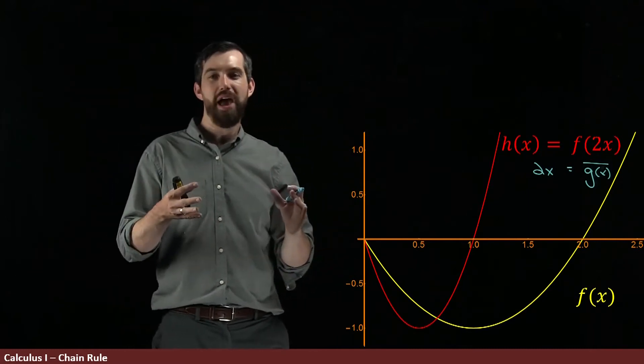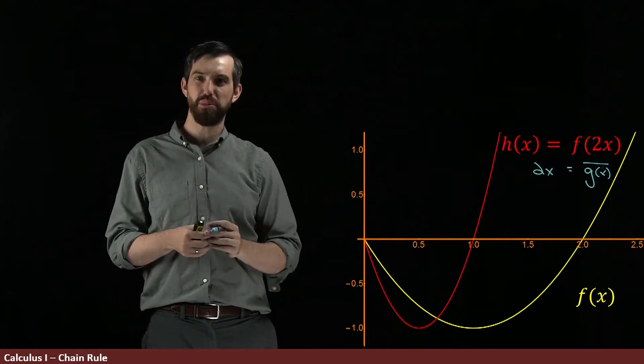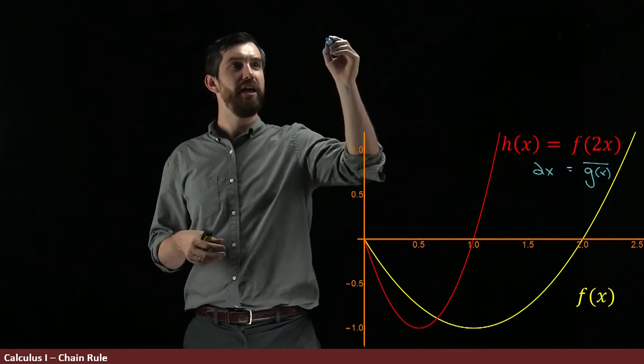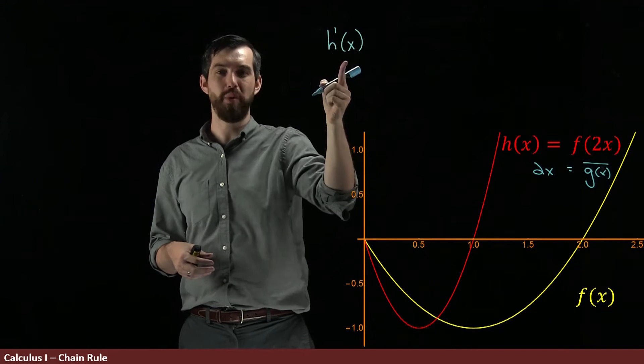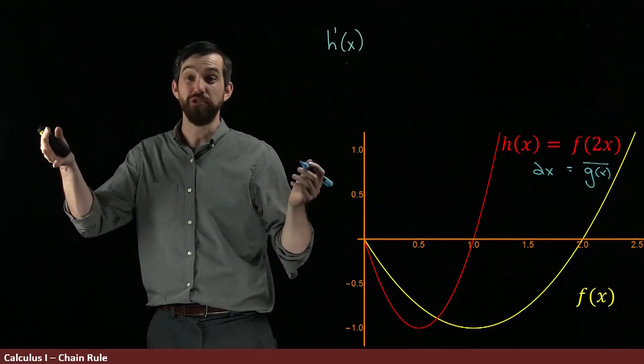So before we look at what happens graphically, let's just compute this out algebraically. That is, if I want to figure out what the derivative of h is, so if I want to figure out what h prime of x is, we use the chain rule.